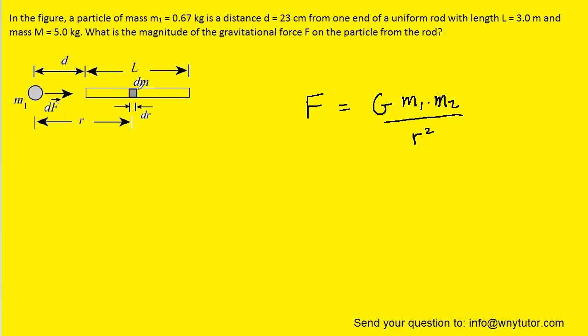What we will do instead is consider a small differential element of the rod. A differential element, which is labeled dm in this diagram, is simply a very tiny portion of the rod. The thickness of that differential element is so thin that we call it dr. The mass of that differential element is so tiny that we call its mass dm. And we'll notice that the distance from this differential element over to mass m1 is given in the diagram by lowercase r.